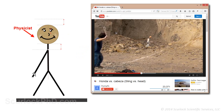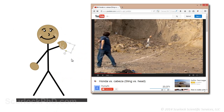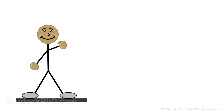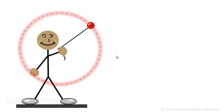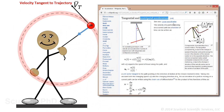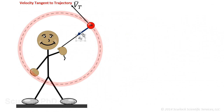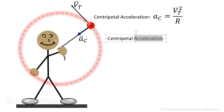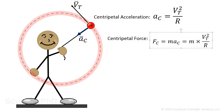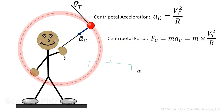Suppose a physicist is whirling a ball with mass M attached to a string of length R around in a circular trajectory, maintaining a constant velocity V_T. The centripetal acceleration A_C required to keep the ball moving along its circular trajectory is given by the square of this velocity divided by R. The centripetal force associated with this acceleration is given by the product of M times A_C.